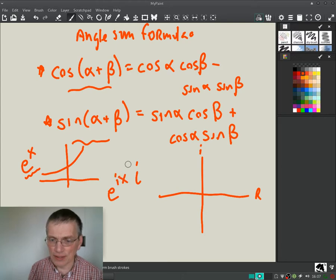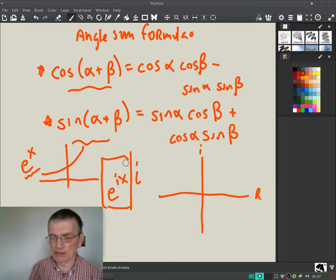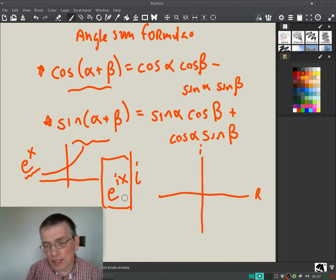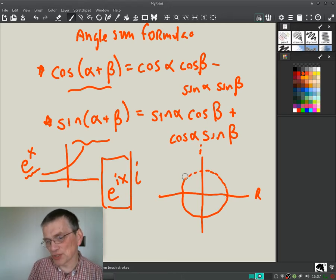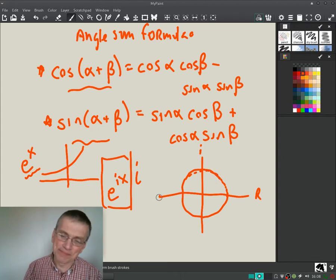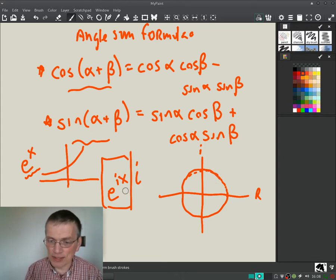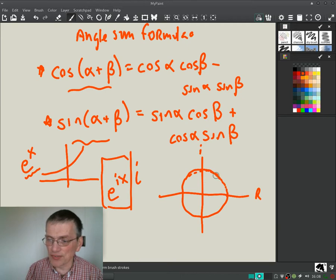But it turns out this does something very strange if we put an imaginary number up there. e to the ix does weird things. It doesn't go off to infinity. It lives in the imaginary plane and it goes around in a circle. It's very strange. I'm not sure why. It's not obvious to me why this does this, but it does.